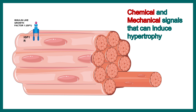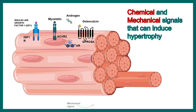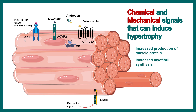Insulin-like growth factor 1 (IGF-1) is a key driver for hypertrophy. Other factors include myostatin, androgen, and osteocalcin. Mechanical signals interpreted by integrin-like receptors also contribute. All these signals lead to increased production of muscle protein and increased myofibril synthesis, resulting in an overall increase in muscle size.